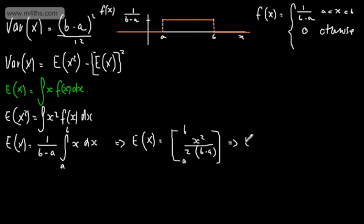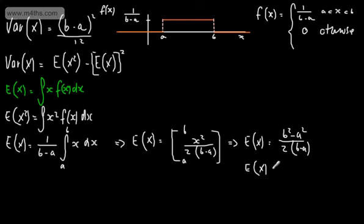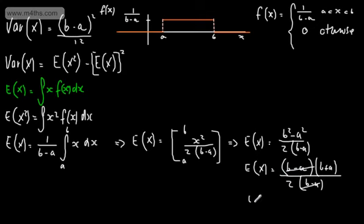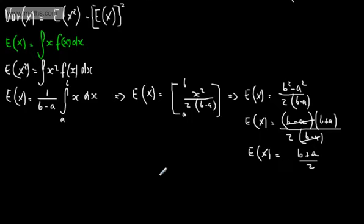Evaluating, E[X] = (b² minus a²) over 2(b minus a). We can rewrite the numerator as a difference of squares: (b minus a)(b plus a). The (b minus a) terms cancel, so E[X] = (b plus a) over 2. That is the standard result for the expected value of the continuous uniform distribution.